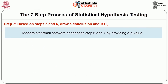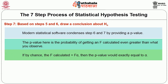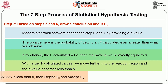The last step, step 7, draws the conclusion about the null hypothesis based on steps 5 and 6. Statistical software condenses steps 6 and 7 by providing a p-value, which is the probability of getting an F calculated even greater than what you observe. If the F calculated equals F-alpha, the p-value should exactly equal alpha. With larger F calculated values, we move further into the rejection region and the p-value becomes less than alpha. The decision rule is: if the p-value obtained from the ANOVA is less than alpha, then reject the null hypothesis and accept the alternative hypothesis.